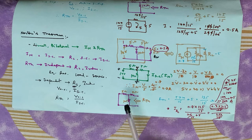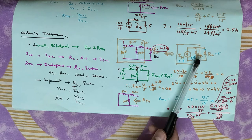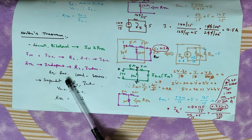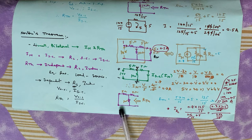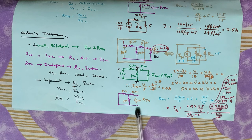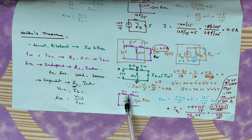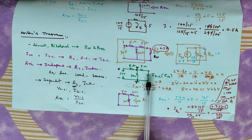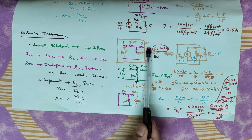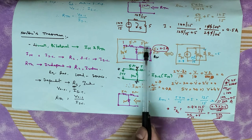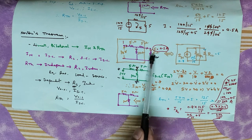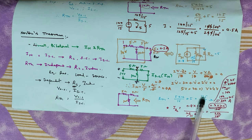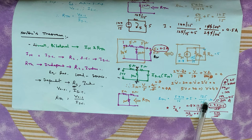Now we calculate RTH. RTH is straightforward — it is the same method as in Thevenin's theorem. We deactivate the voltage source (replace with short circuit) and remove the load resistor. RTH works out to 125 divided by 15 ohms.